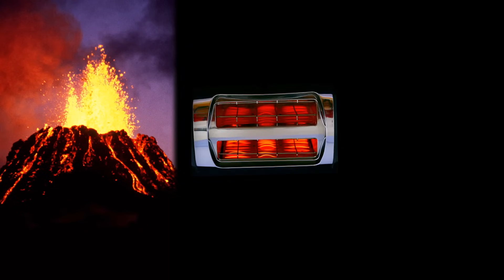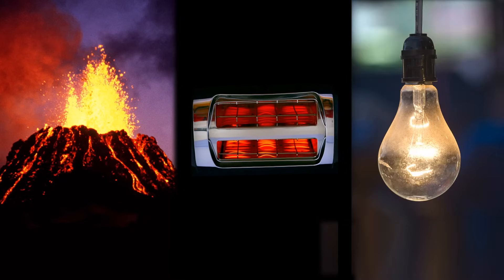Most things we see that glow are glowing because they're hot. Things like lava or those hot coils you see inside of a toaster oven. Even the part inside of a light bulb glows because it's hot. But glow in the dark materials like glow in the dark stars and glow sticks, they're different. They're not glowing because they're hot and you don't have to plug them into anything.